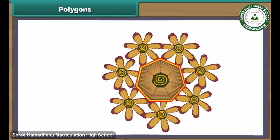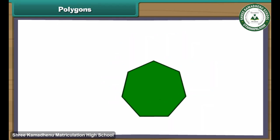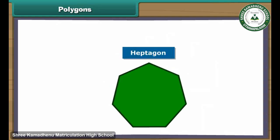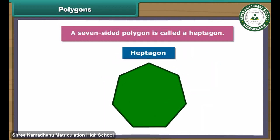Let us create a wall hanging using seven straws. The rainbow wall hanging with seven line segments is ready. A seven-sided polygon is called a heptagon.